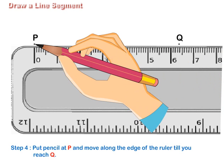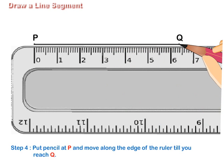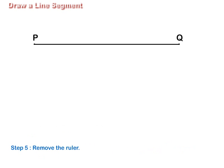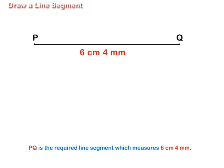Step 4: Put pencil at P and move along the edge of the ruler till you reach Q. Step 5: Remove the ruler. PQ is the required line segment which measures 6 cm 4 mm.